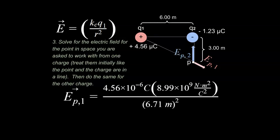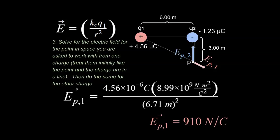We plug that 6.71 meters into the equation and solve for the electric field at point P caused by Q1, getting 910 newtons per coulomb. Newtons per coulomb means: what would be the force experienced by a charge placed at that point in space, per unit coulomb. So at point P from Q1, the electric field is 910 N/C — that's what we'd get if we placed one coulomb of charge there.